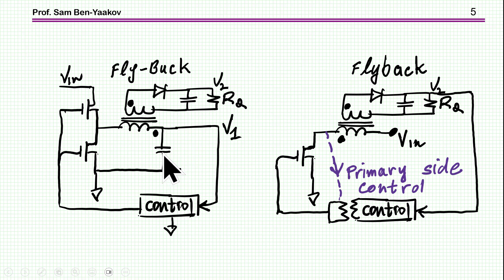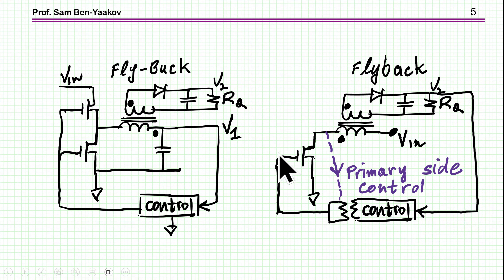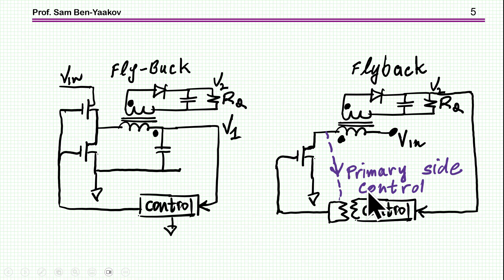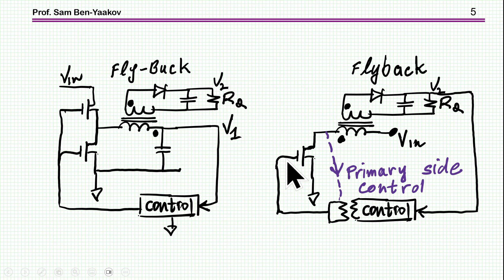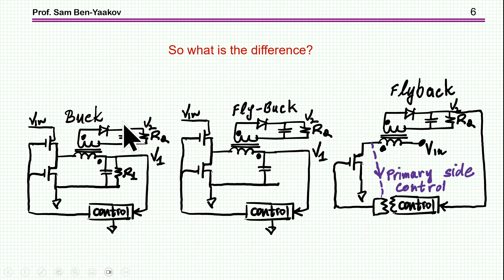When there is no load, this topology is very similar to the flyback. Except that in the flyback, we have the input on one side and the output on the other. Usually we take the output signal through an isolated link for feedback. Texas Instrument is claiming that one of the major advantages of the flyback is that you don't need the feedback from the output — the feedback is coming from the primary side. But this is not really correct because we now have primary side control of flybacks. So in this respect, there's really no difference between the two. However, the operation is different because in this topology we have two transistors, while in the flyback we have one transistor.